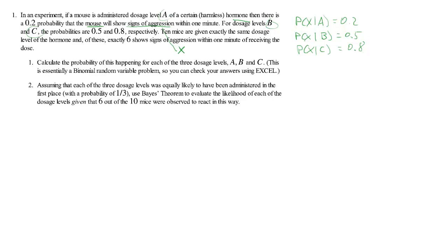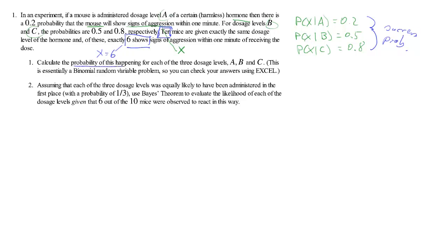We have an experiment where 10 mice are exposed to a dosage and 6 show signs of regression. In slight violation of notation, we'll call this X equals 6. This is a binomial experiment where we have a success probability which depends on the dosage, and we now want to figure out the probability of getting 6 out of 10 successes depending on the three dosage levels.